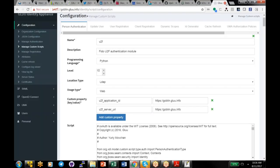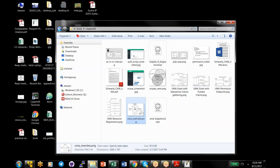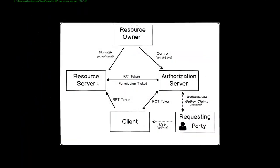What makes UMA complicated is that there are three parties involved, not just two. If you're writing an API (resource server hat), you need to ensure there's a token, get a permission ticket if there isn't one, and introspect the ticket to verify it's valid and has the right scopes. If you're writing a client, you need to call the API, get an RPT token, and if you get back a 401 with a permission ticket, obtain a new token. If you get a redirect to the claims gathering endpoint, you need to handle that.